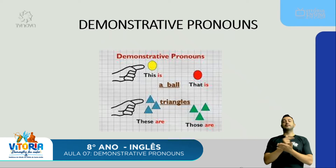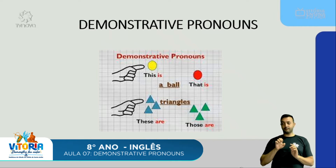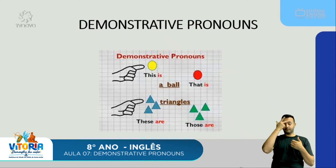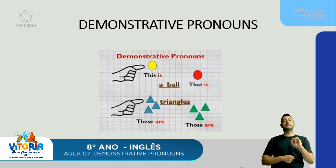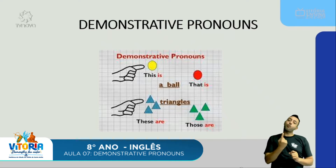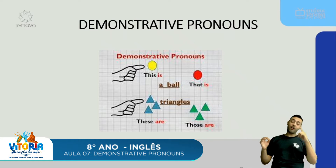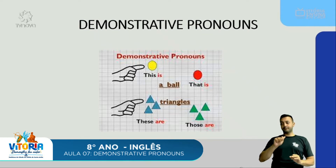Nessa figura temos a demonstração do uso do demonstrative pronoun. Temos duas balls: a yellow ball e a red ball. Como vemos na imagem, a yellow ball está próxima da pessoa que fala. Se está próxima, o pronome correto é o 'this' — 'This is a ball', esta é uma bola. Já a red ball está distante da pessoa que fala, então o correto é o 'that' — 'That is a ball'.